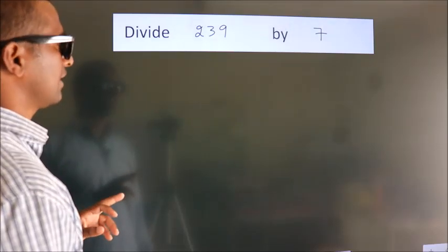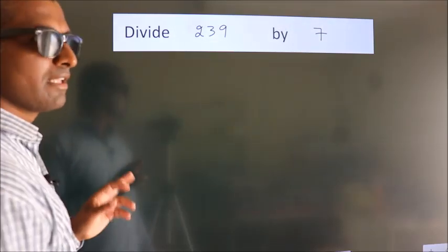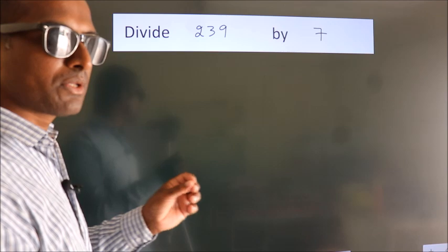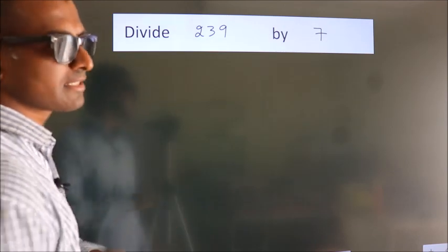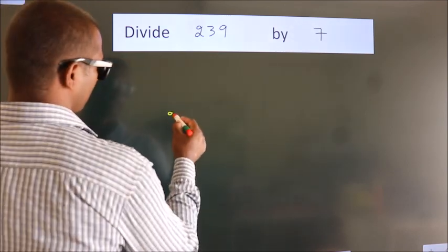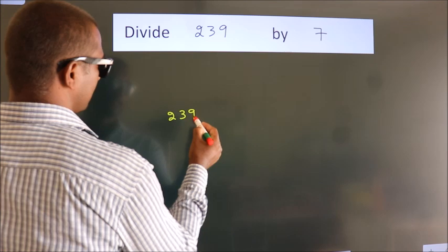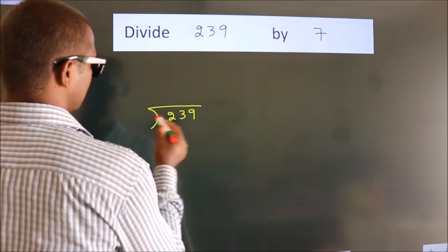Divide 239 by 7. To do this division, we should frame it in this way. 239 here, 7 here.